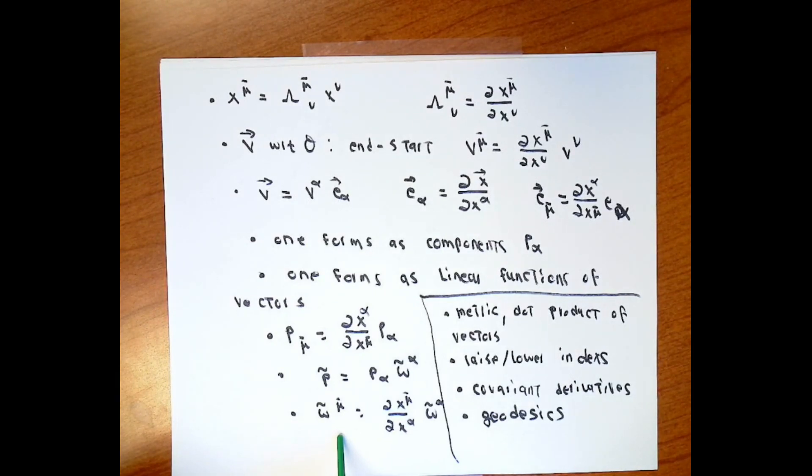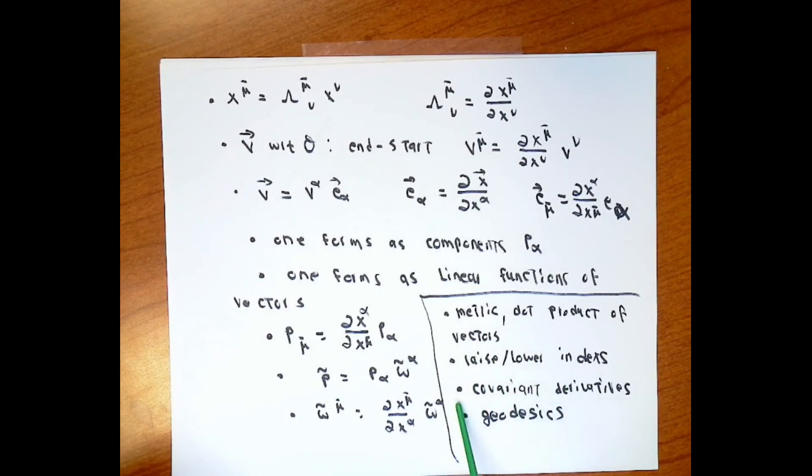We talked about the metric, which told us how to do dot products of vectors. We talked about how to raise or lower indexes using the metric. We talked about covariant derivatives, and we talked about geodesics. On the face of it, everything is right out the window.